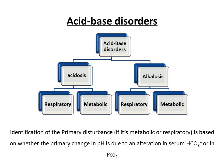These conditions can be categorized as acidosis or alkalosis and have a respiratory or metabolic origin depending on the cause of the imbalance. In order to identify the primary disturbance — whether it's metabolic or respiratory — we need to know if the primary change in pH is due to an alteration in serum HCO3⁻ or in the partial pressure of CO2.